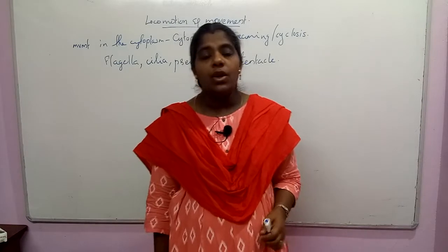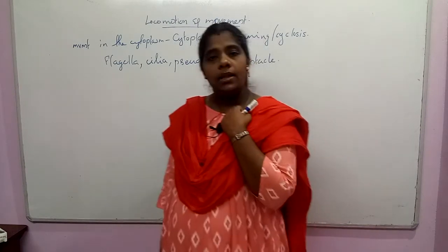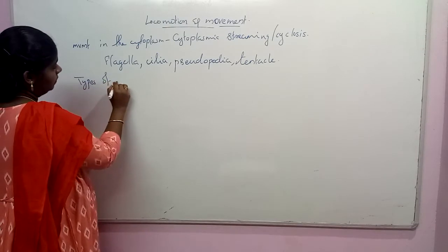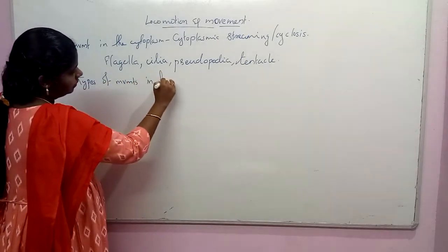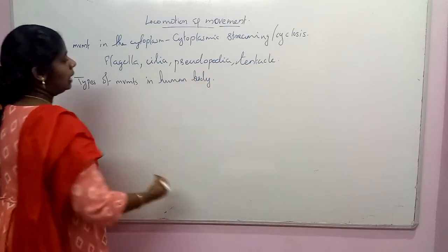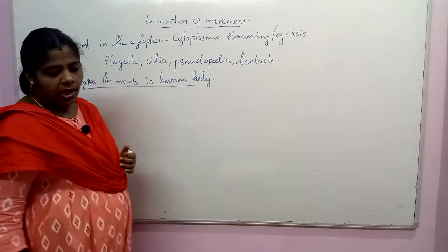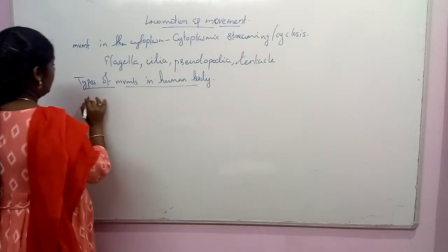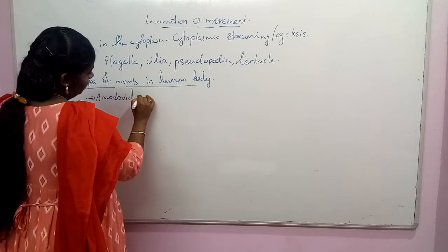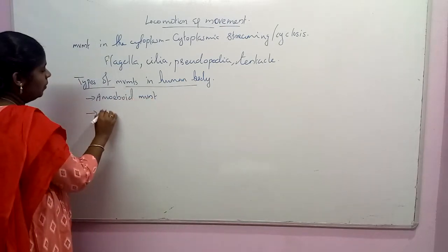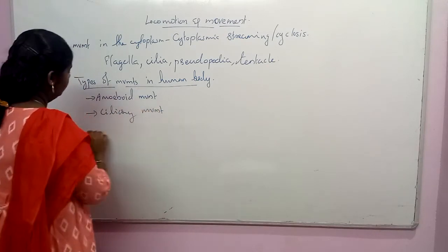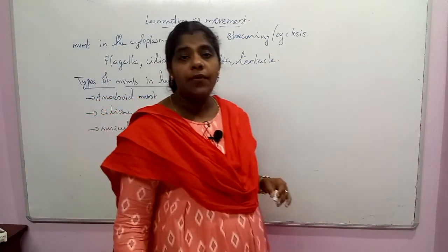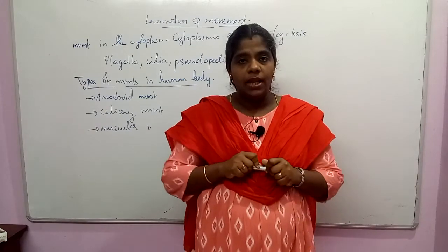Now we will see the types of movements which occur in the human body. In the human body there are three different types of movement: one is amoeboid, another is ciliary, and another is muscular movement.